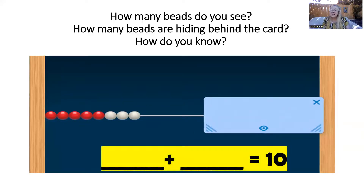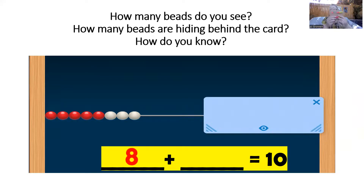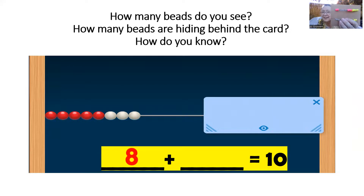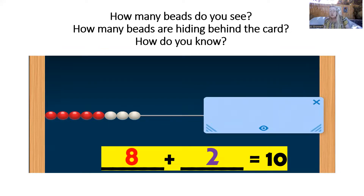How many beads do you see in this picture? Make it on your number rack. Yes, there are eight beads in the picture. And if there are eight beads in the picture, how many are hiding behind the card? Yes, two beads are hiding behind the card. So good. Let's read that equation: eight plus two equals 10. Good job.